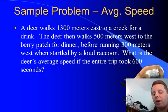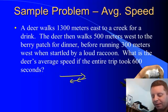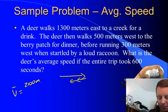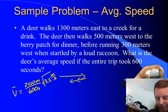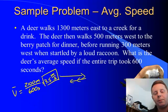Looking at this in a problem, our deer walked 1,300 meters east to a creek for a drink, then 500 meters west, then 300 meters west. What is his average speed if the entire trip took 600 seconds? Well, average speed is the total distance traveled, which we said was 2,100 meters, in a time of 600 seconds, so the average speed was 3.5 meters per second. And since average speed is a scalar, we don't need to include a direction. It's a magnitude only.